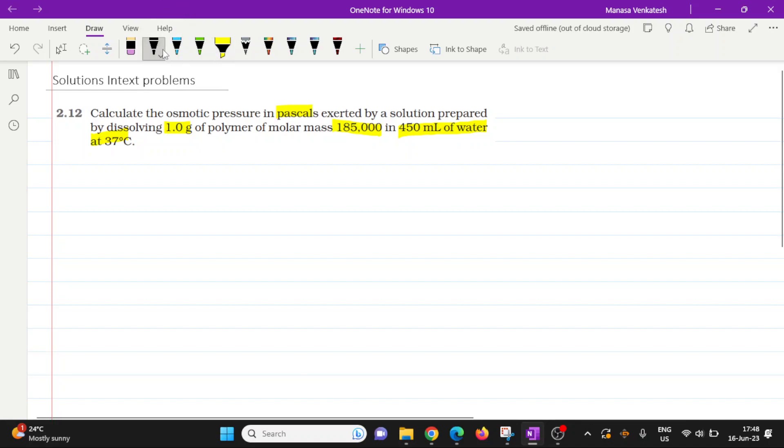Okay, so we've been given the following things, let's write it down. So we've been given the mass of the particular polymer, so I'm just going to call it mass of polymer is 1.0 grams.